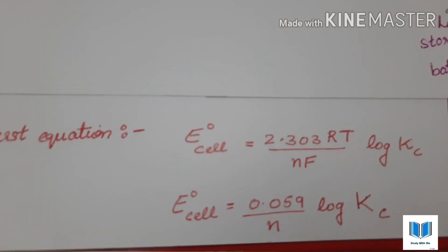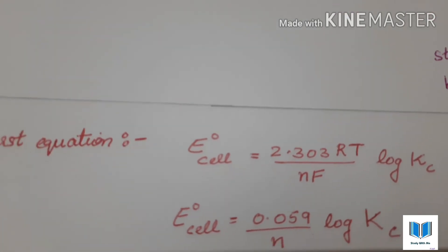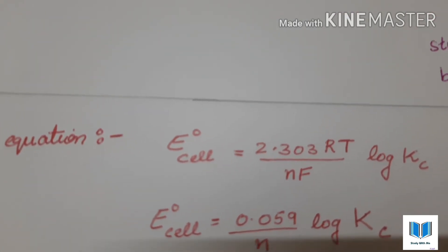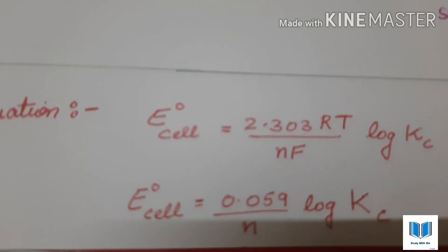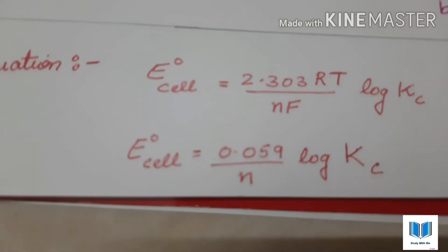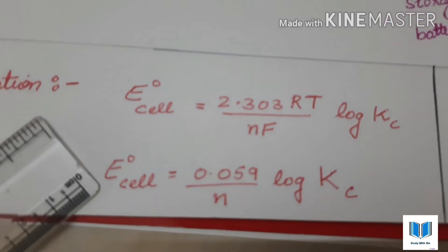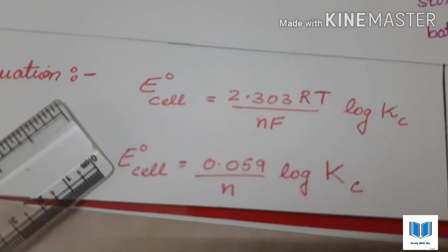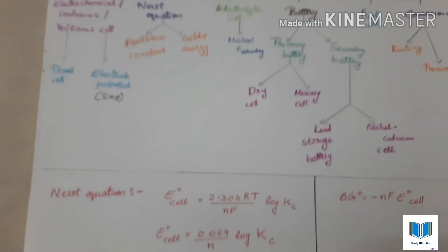Under the equilibrium condition, the commonly used Nernst equation — the values of R, T, and F are constants. So after putting the values, we get the equation in simplified form. This way you can solve many numerical problems.